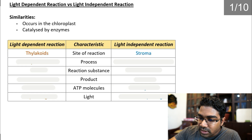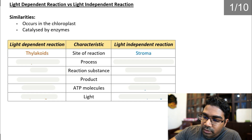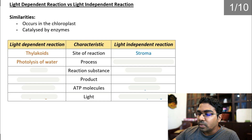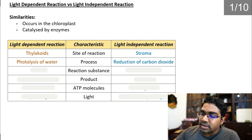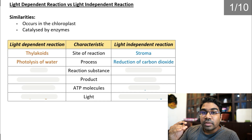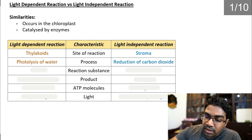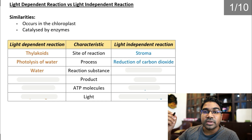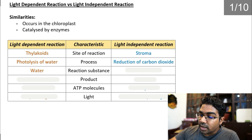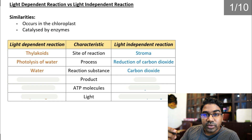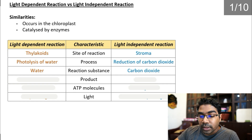The process in the light dependent reaction is the photolysis of water — the breaking down of water — whereas the process in the light independent reaction is the reduction of carbon dioxide. From this you can identify the reaction substances: for the light dependent reaction it is water, and for the light independent it is carbon dioxide.